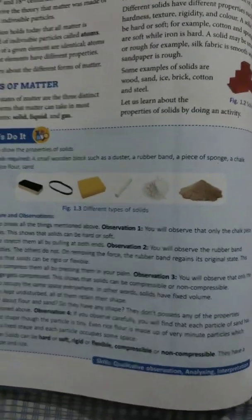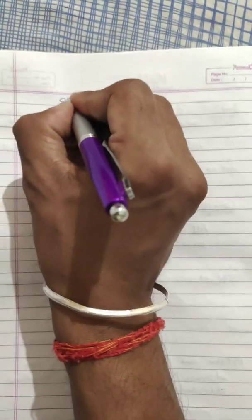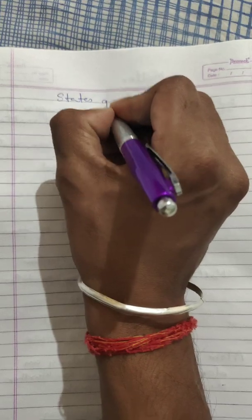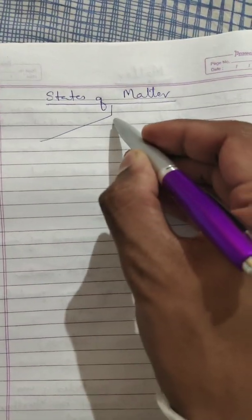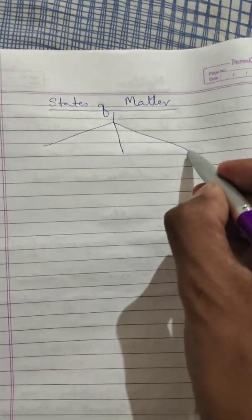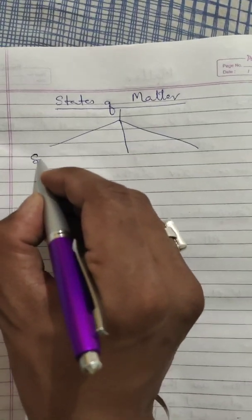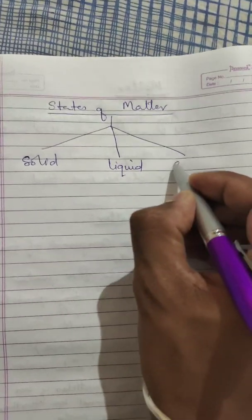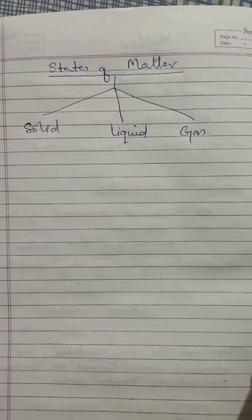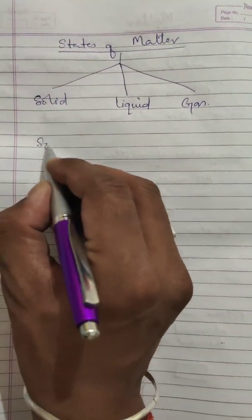Our next topic is states of matter. Matter is divided into three states. We all know that those states are solid, liquid, and gas. These are the three states of matter. One by one we will discuss all these states.